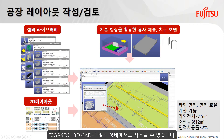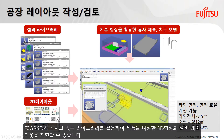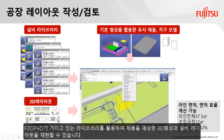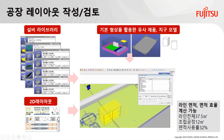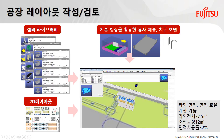FJGP4D can be used even when data cannot be prepared by 3D CAD. By using the FJGP4D library function, you can create a simple 3D shape assuming a product and express the layout of equipment. The models used from the equipment library can be resized to represent the layout of your production line that is close to the actual size.